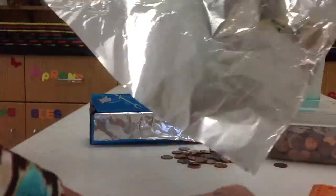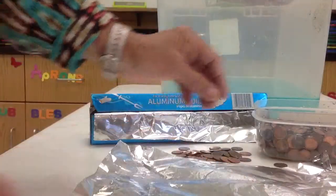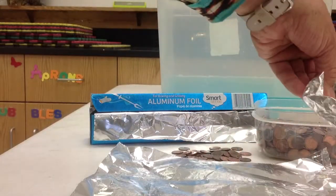They start with a square foot and bend their aluminum foil until they can make something that'll float.